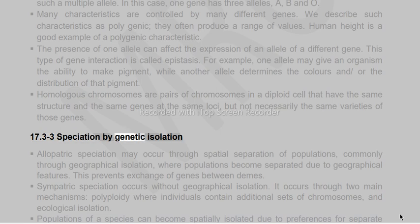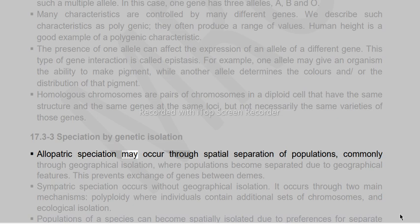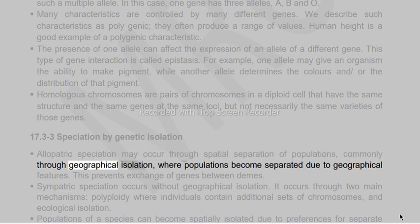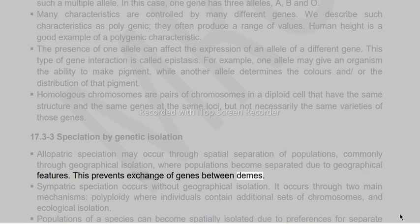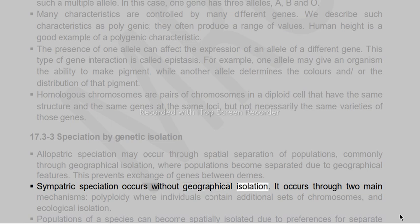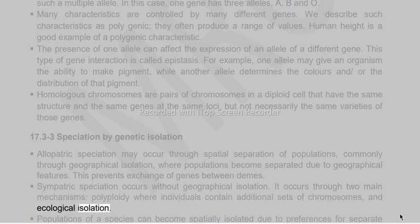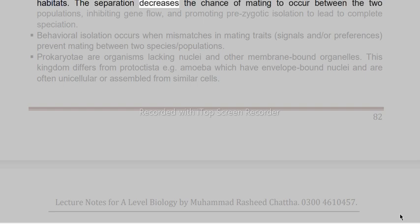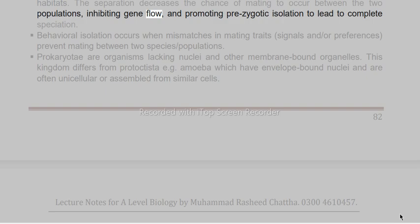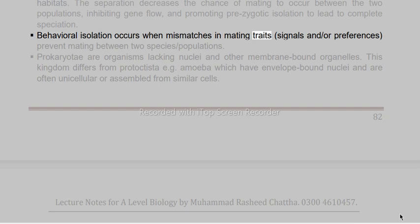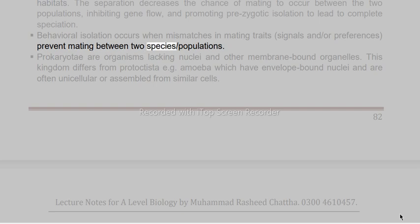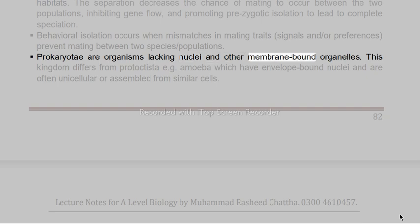Allopatric speciation may occur through spatial separation of populations, commonly through geographical isolation, where populations become separated due to geographical features, preventing gene exchange between demes. Sympatric speciation occurs without geographical isolation through two main mechanisms: polyploidy (individuals contain additional sets of chromosomes) and ecological isolation. Populations of a species can become spatially isolated due to preferences for separate habitats, decreasing the chance of mating and inhibiting gene flow. Behavioral isolation occurs when mismatches in mating traits, signals, or preferences prevent mating between two species populations.